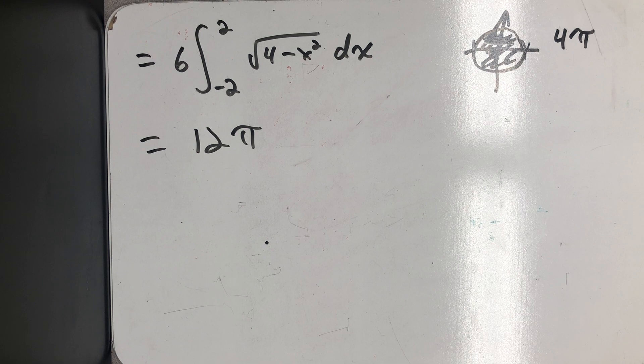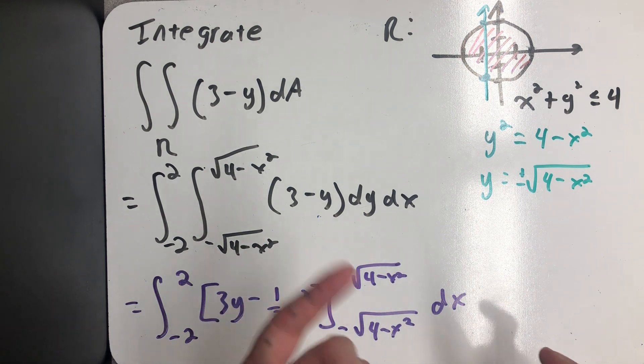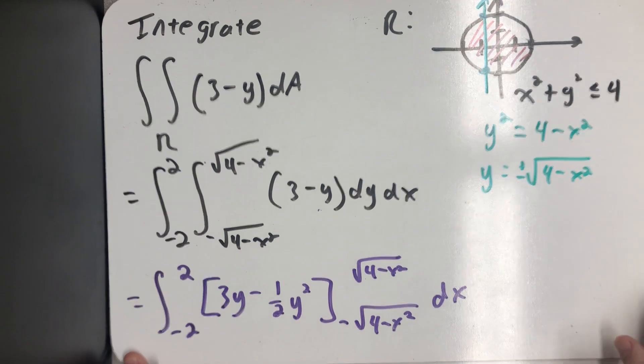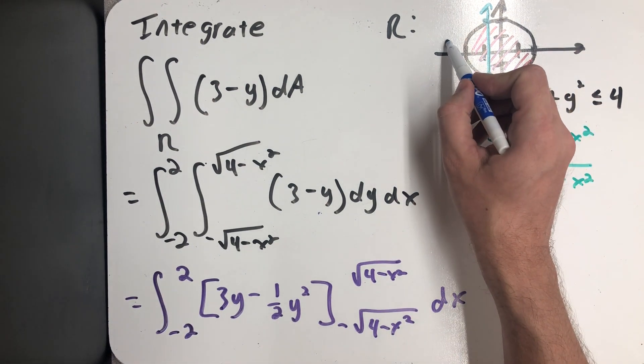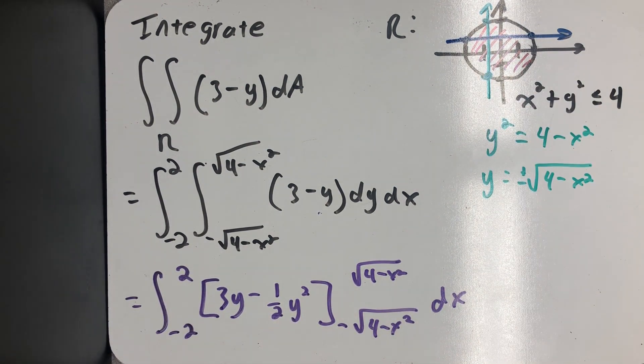Now I'd like to set up the problem by integrating with respect to x and then y. So I need to draw arrow through the region in increasing order of the first variable. This time will be x. I'll get a left function and a right function this time.